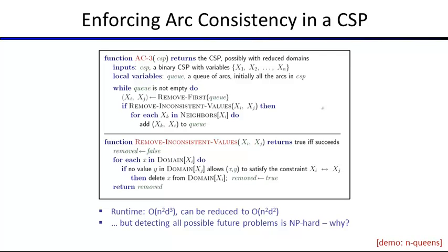The AC-3 algorithm puts all arcs on a queue, cycles through them, and when a value is deleted from a tail, adds the affected arcs back to the queue. How long does this take? An arc can be added to the queue at most D times since each deletion is permanent. Checking takes D² work per arc. With N² arcs total, the worst-case complexity is O(N²D³), though a clever trick reduces this to O(N²D²).